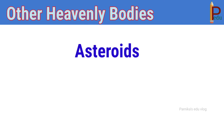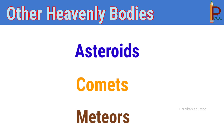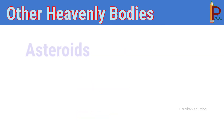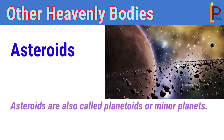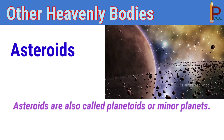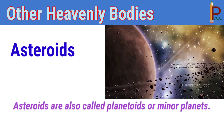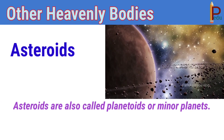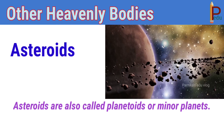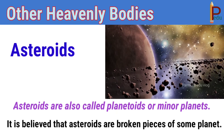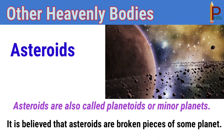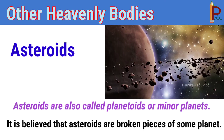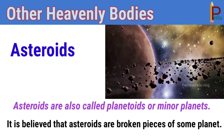Let's look at other heavenly bodies: asteroids, comets, meteors. Asteroids are also called planetoids or minor planets. It is believed that asteroids are broken pieces of some planet.